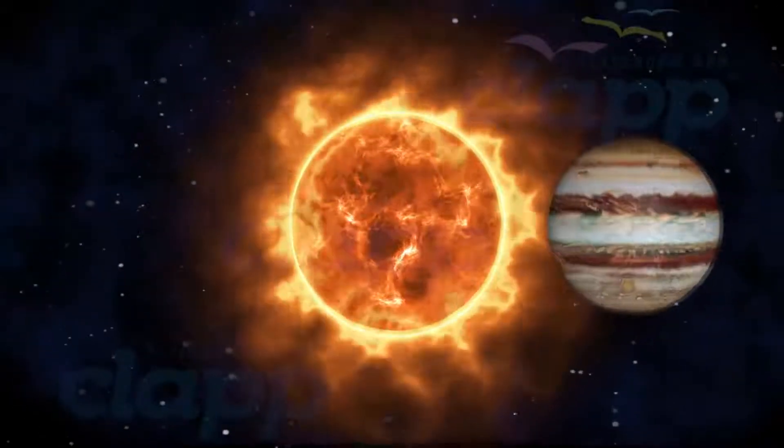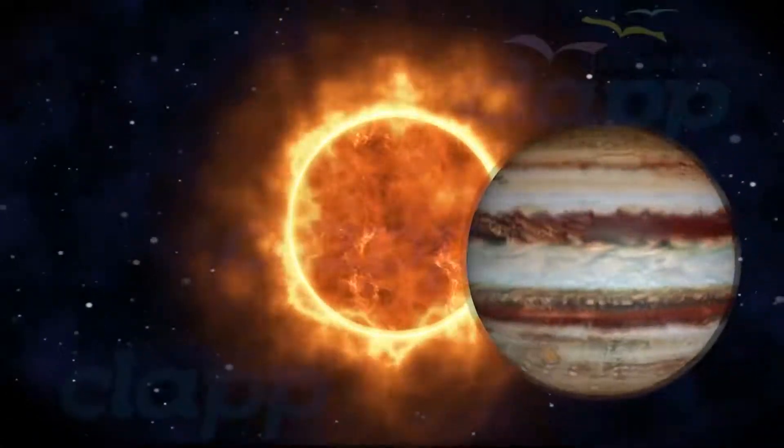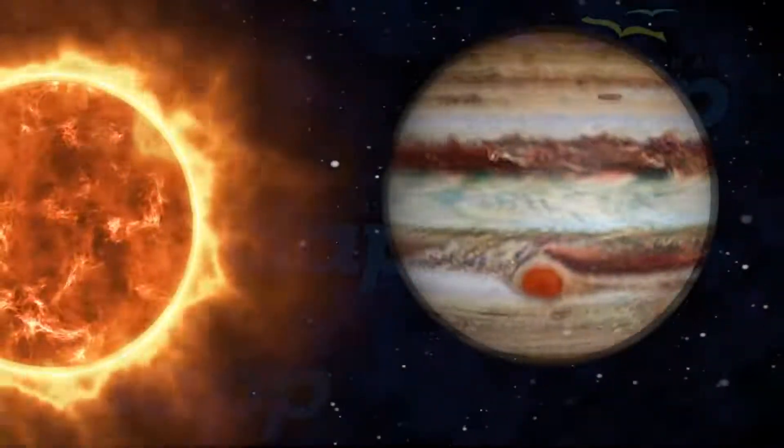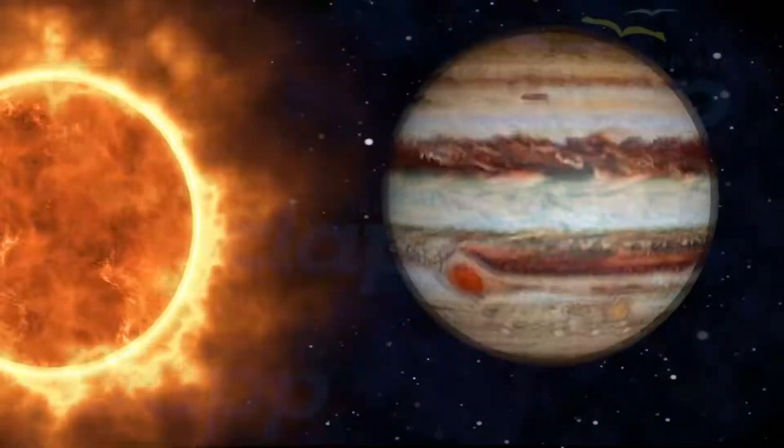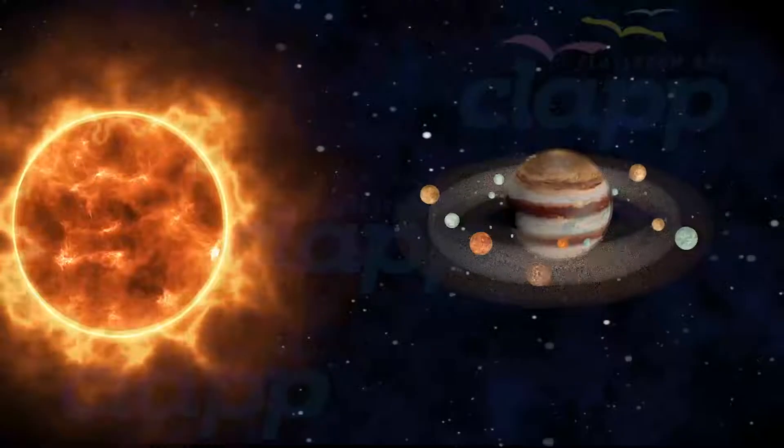Jupiter is the fifth planet from the Sun and the largest in the solar system. Surrounding Jupiter is a faint planetary ring system.